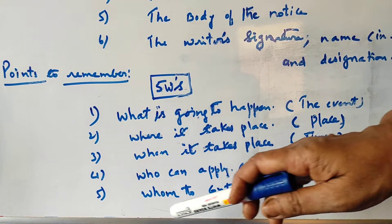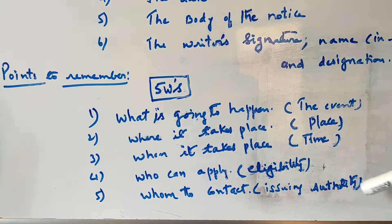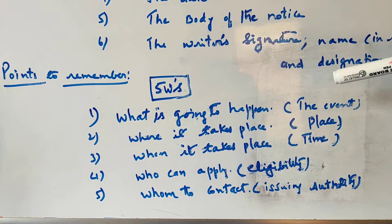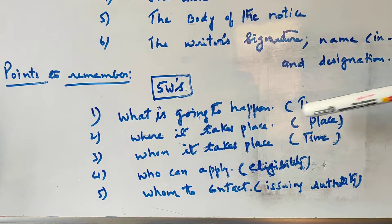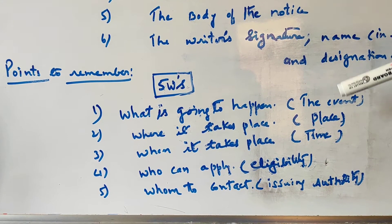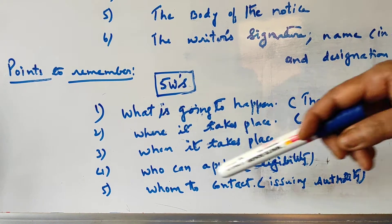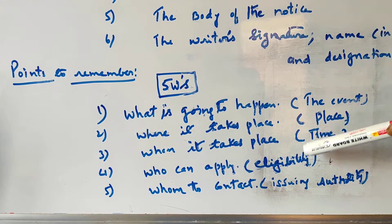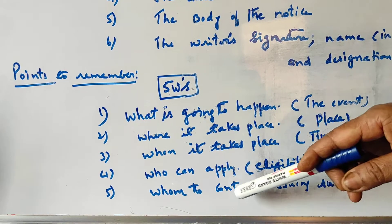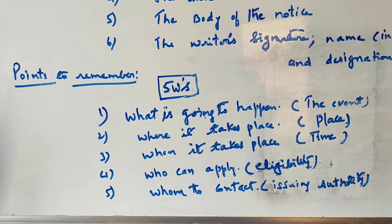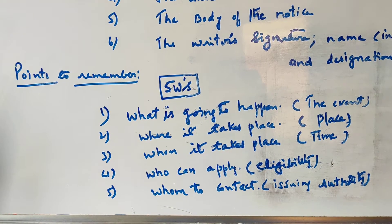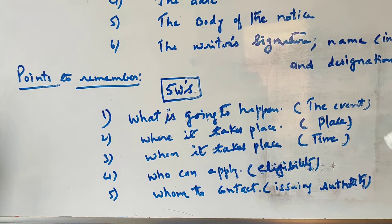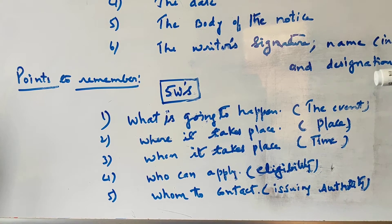Who has to do that, and whom to contact — the issuing authority. So these are the five W's: first is the event, which is the subject; second is the place, where it will happen; third is the date, when it takes place; fourth is who can apply, the eligibility; and fifth is whom to contact. All five points should be included. I will show you one example notice so that it will be clear.